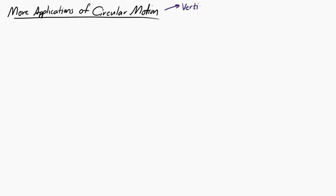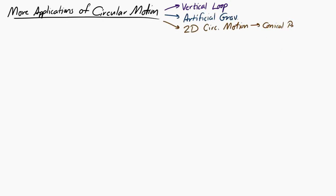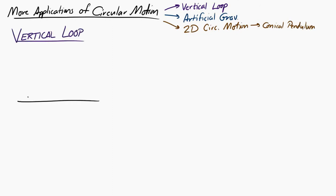Let's take a look at more applications of circular motion, specifically circular motion in a vertical loop, artificial gravity, and two-dimensional circular motion with emphasis on the conical pendulum. First, let's look at circular motion in a vertical loop. Imagine you have a ball on the end of a string and you swing it around in a vertical loop like this picture.